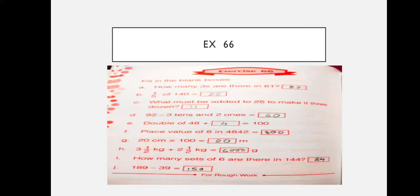Number G: 20 cm into 100 — that equals 20 meters. After that: 3 and a half kg plus 2 and a half kg equals how many grams? 3 and a half kg is 7/2 kg, and 2 and a half kg is 5/2 kg. Adding both gives 6 kg, and 6 kg equals 6000 grams.